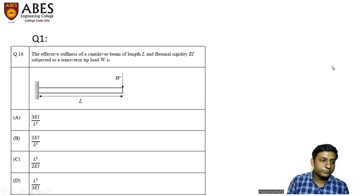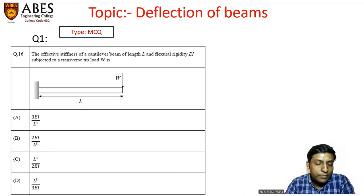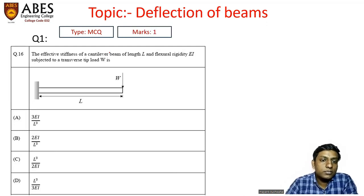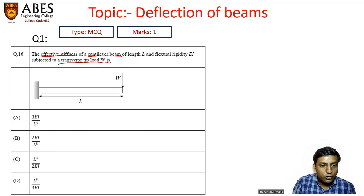The very first question which I have brought was question number 16 and it is related to the topic deflection of beams. This question was of MCQ type and it was asked for one mark only. The question says that effective stiffness of a cantilever beam of length L and flexural rigidity EI subjected to a transverse tip load W is. So basically the question is asking you to find out the stiffness of the beam.